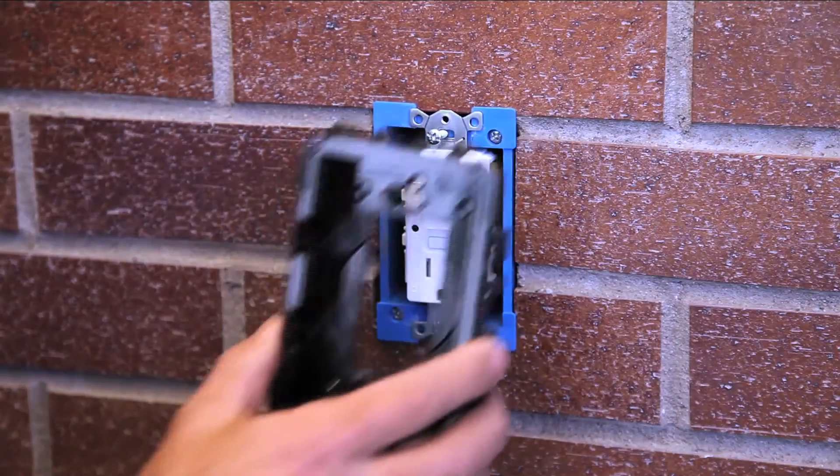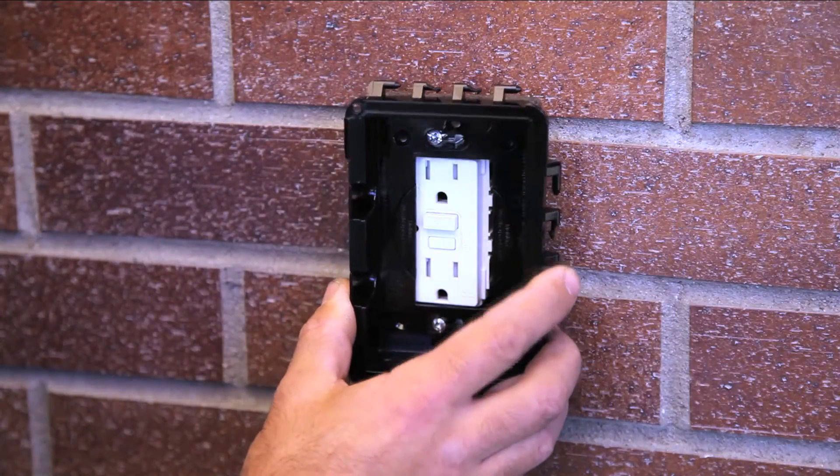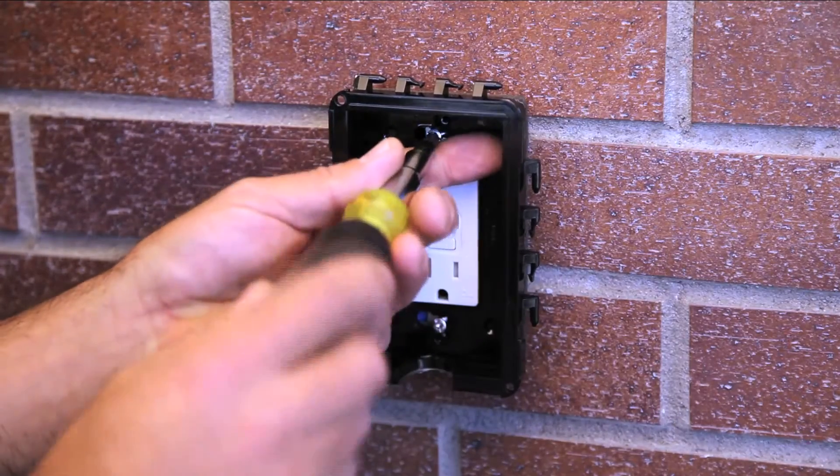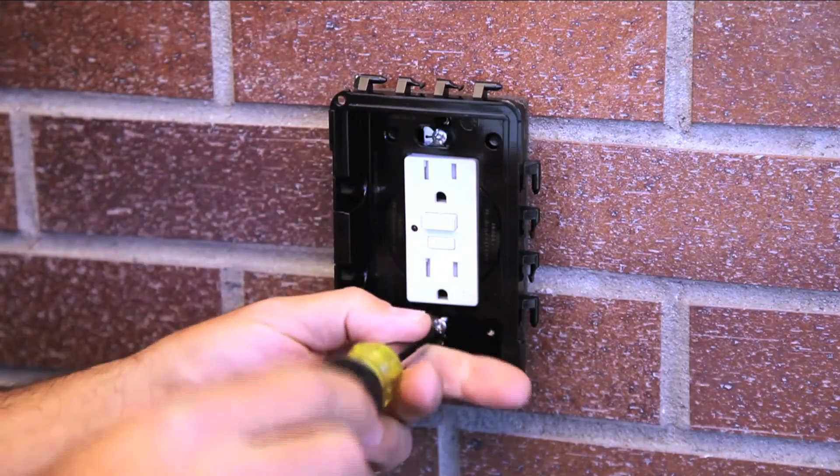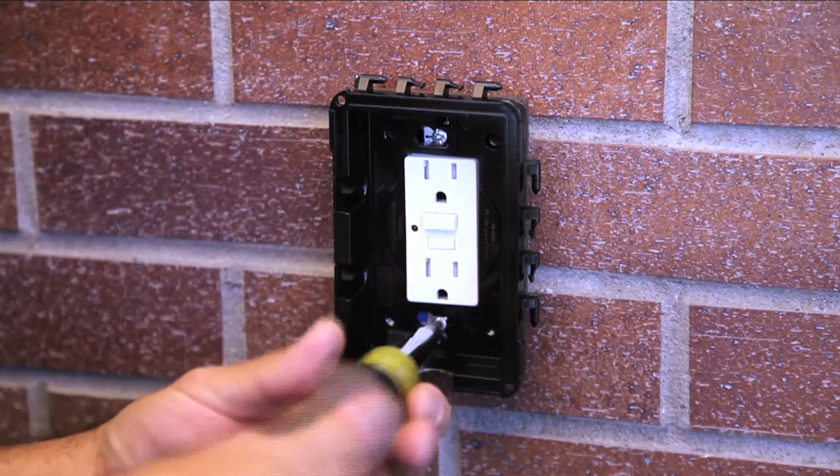Align keyholes on the base with screws, slide over base, and fasten screws. Compress gasket by tightening screws until snug.